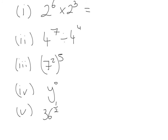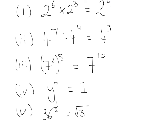Quick method for all of these: when we multiply indices, we add what's on their shoulder, so that's 2 to the power of 9. For division, we always subtract the indices, so that's 4 to the power of 7 minus 4, which gives 3. When we have a power raised to another power, we always multiply, giving 7 to the power of 10. Y to the power of 0 — like any number to the power of 0 — always gives 1. And anything to the power of a half is the same as the square root, so the square root of 36 is 6.